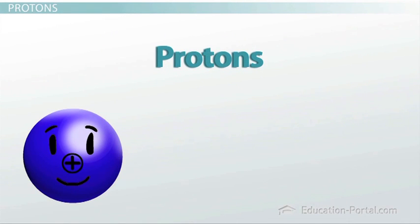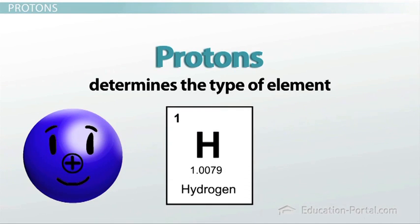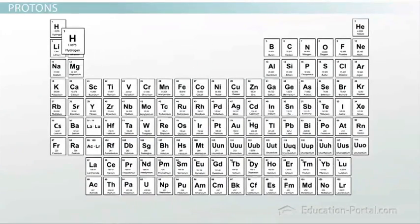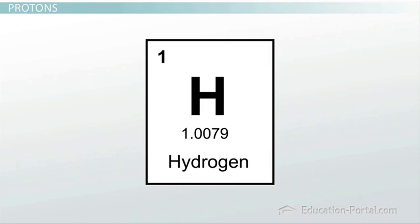Protons are probably one of the single most important parts of an atom. The number of protons an atom has determines what type of element it is. For example, all elements that have only one proton are going to be atoms of hydrogen. Find hydrogen at the top left side of your periodic table. You should notice a few things about this box. First, it may have a large H printed in it. This is the chemical symbol for hydrogen.